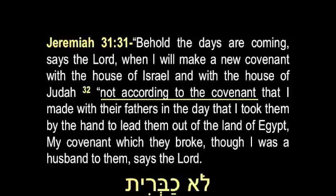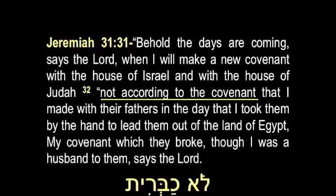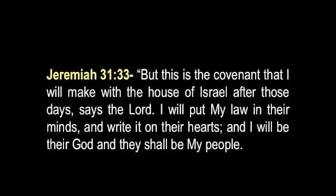So what changed and what didn't? That's why we're doing this study — so you can look at it, because scripture bears witness of itself and explains to us the changes and tells us what stayed the same. As we continue in the prophecy in Jeremiah, we're going to discover our first change from the old covenant to the new covenant, and also our first similarity. Jeremiah 31:33: 'But this is the covenant that I will make with the house of Israel after those days, says the Lord. I will put my Torah in their minds and write it on their hearts. I will be their God and they shall be my people.'